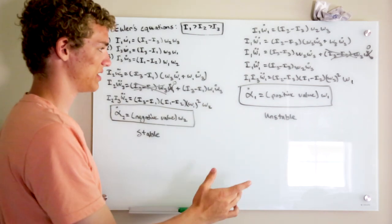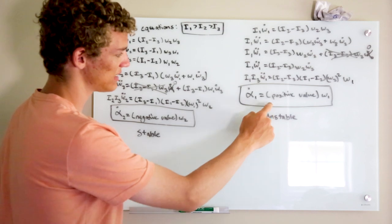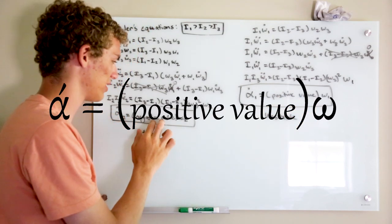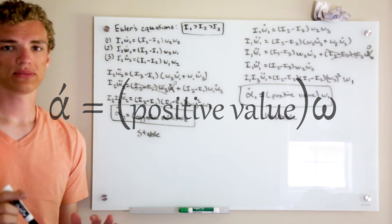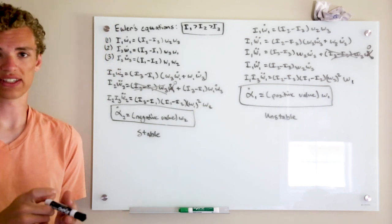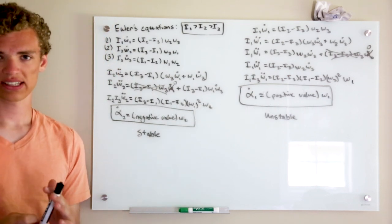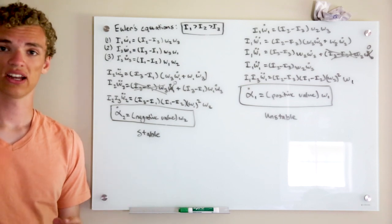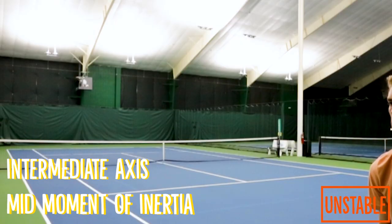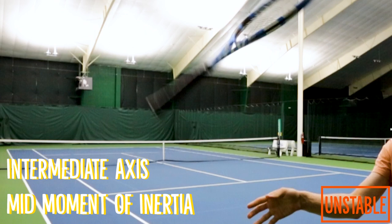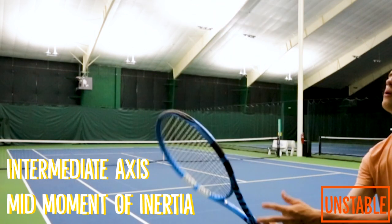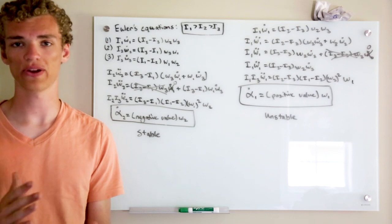The long axis equation is similar, except we have a positive value instead of a negative value. This means that if you have an object rotating around the intermediate axis, there's nothing stopping a slight disturbance from causing the object to rotate along the long or short axis. That's why when we try to rotate an object around the intermediate axis, it becomes very unstable and it'll rotate around one of the two other axes.